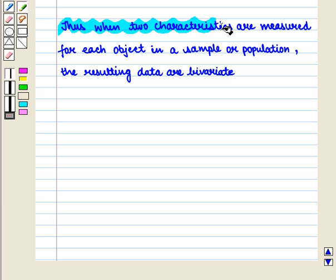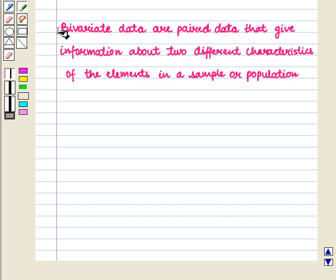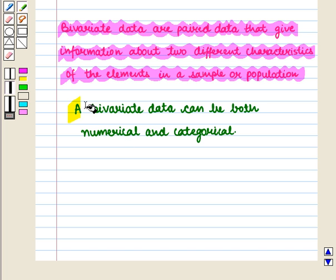When two characteristics are measured for each object in a sample or population, the resulting data are bivariate. Bivariate data are paired data that give information about two different characteristics or attributes or variables of the elements in a sample or population. A bivariate data can be both numerical and categorical.